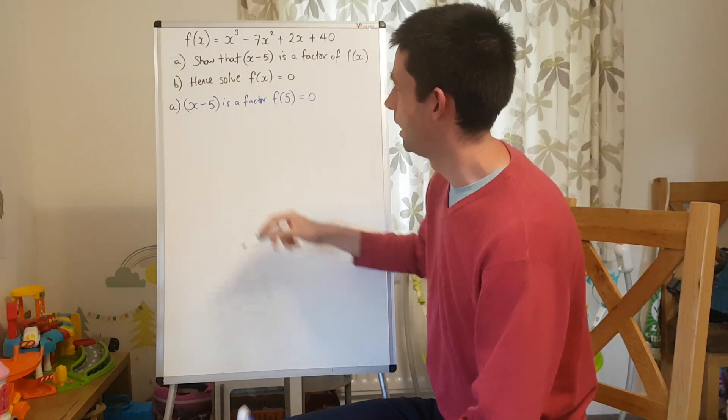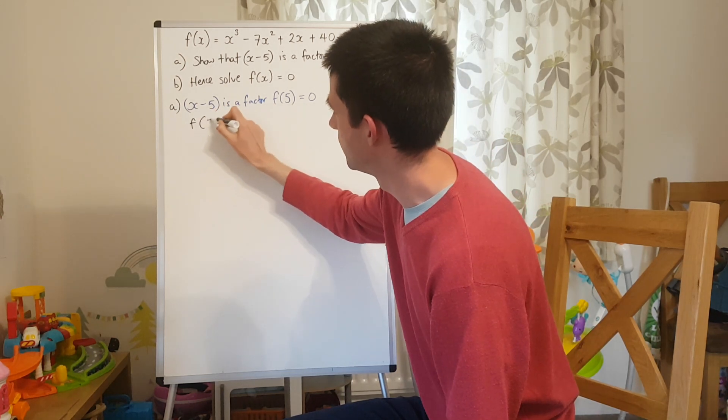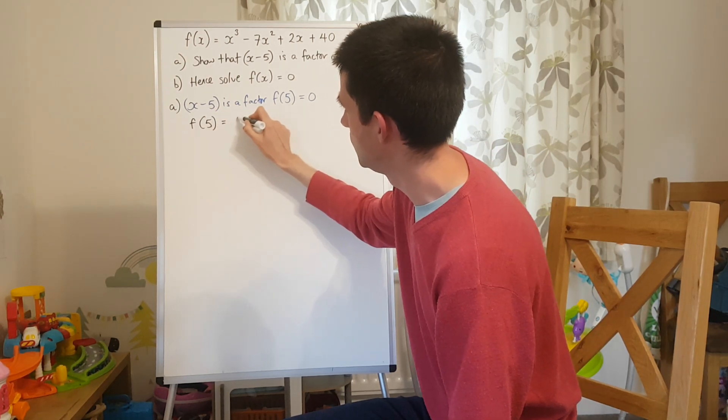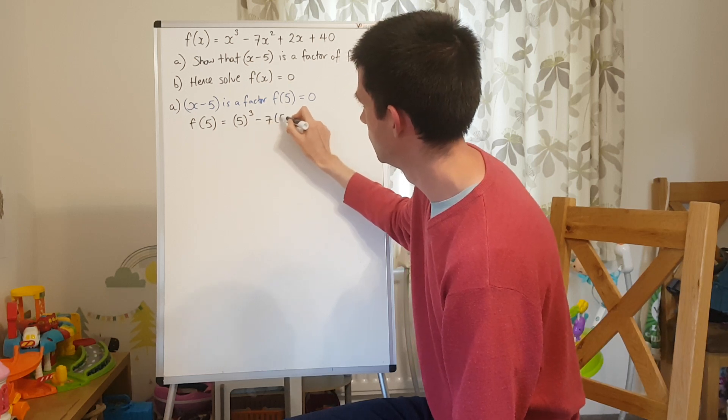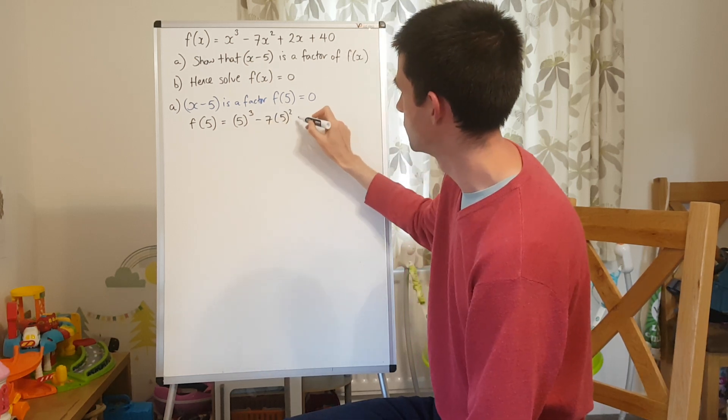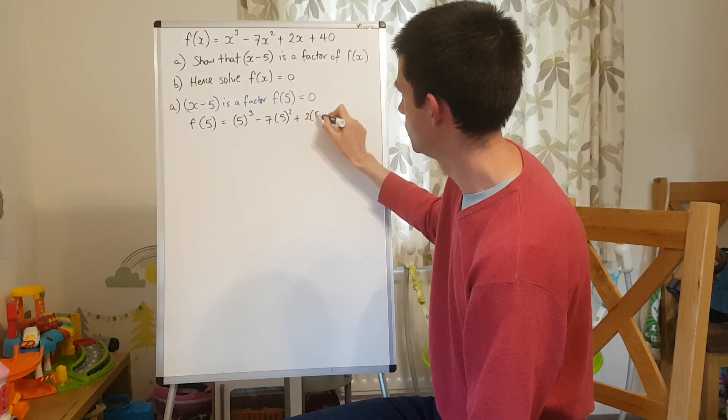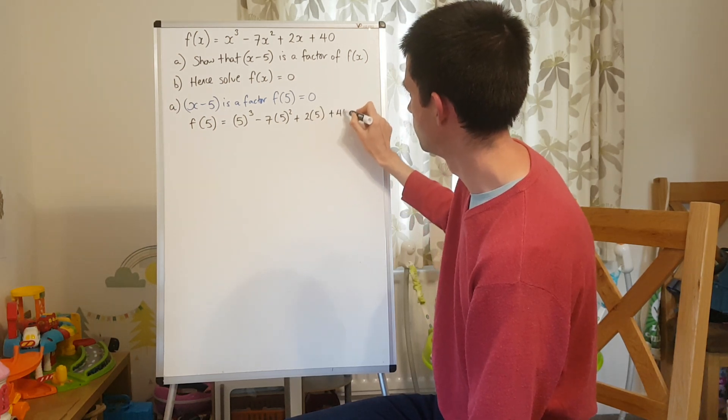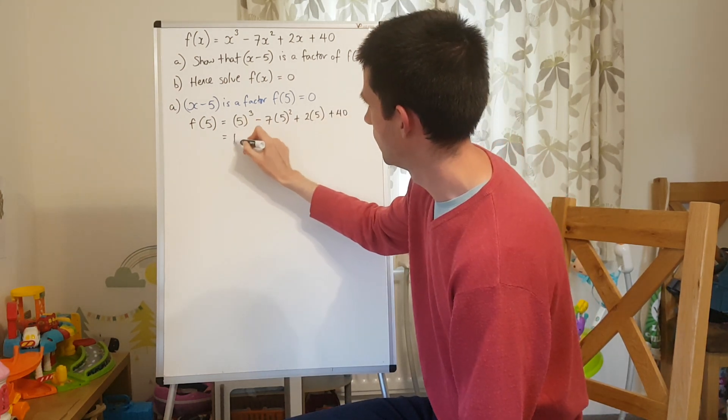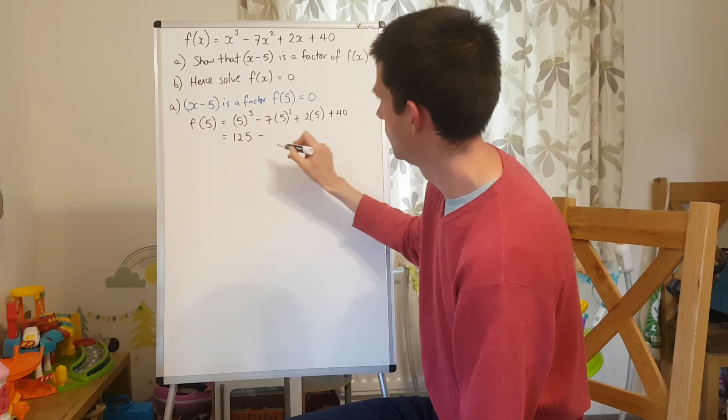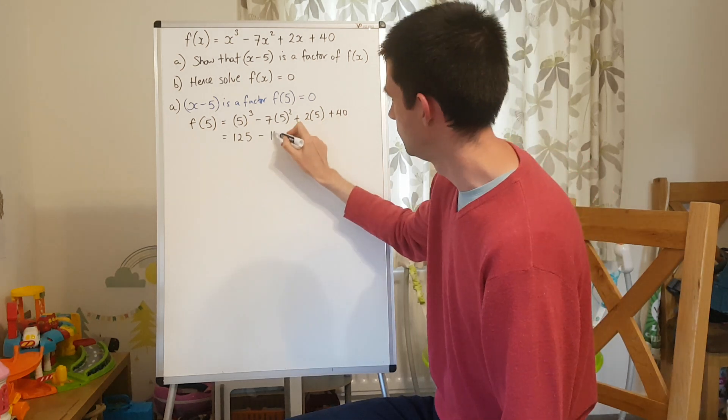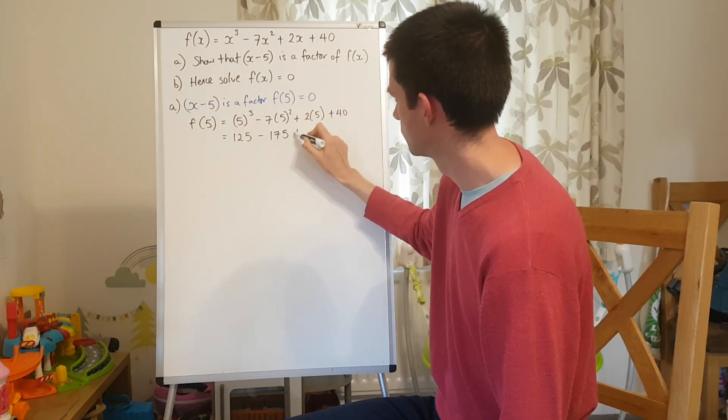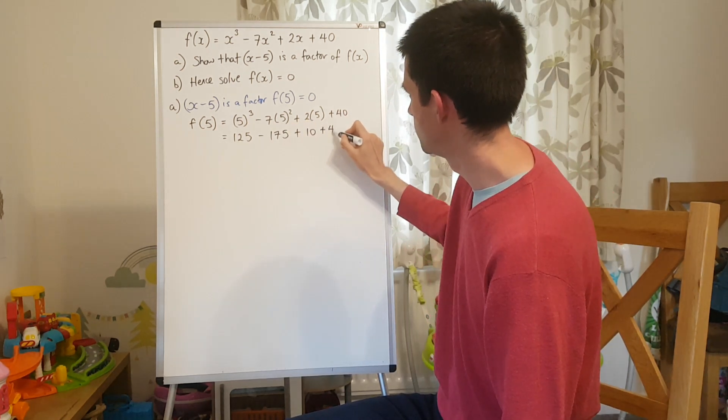So, f of 5, if I substitute 5 into the function, so 5 cubed, take away 7 lots of 5 squared plus 2 lots of 5 plus 40, I get 125 minus 7 lots of 5, which is 175 plus 10 plus 40, which equals 0.